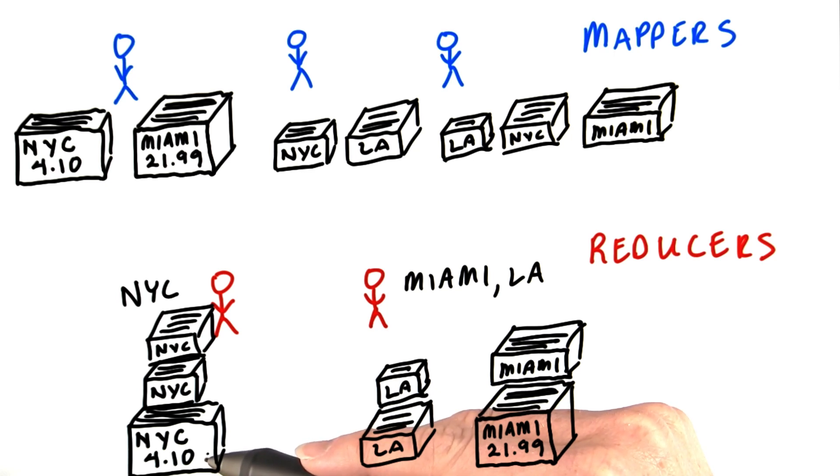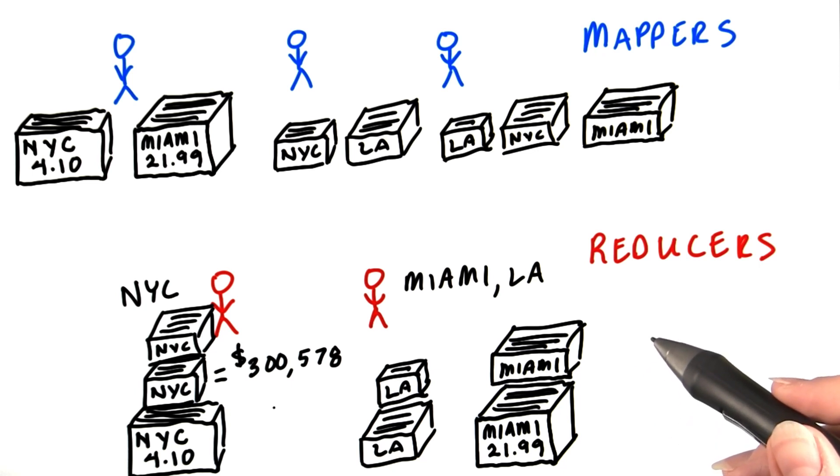That gives them a total sales for that store. They can then write that amount on their final sheet. To keep things organized, each reducer goes through his or her set of piles in alphabetical order. In other words, Los Angeles before Miami.